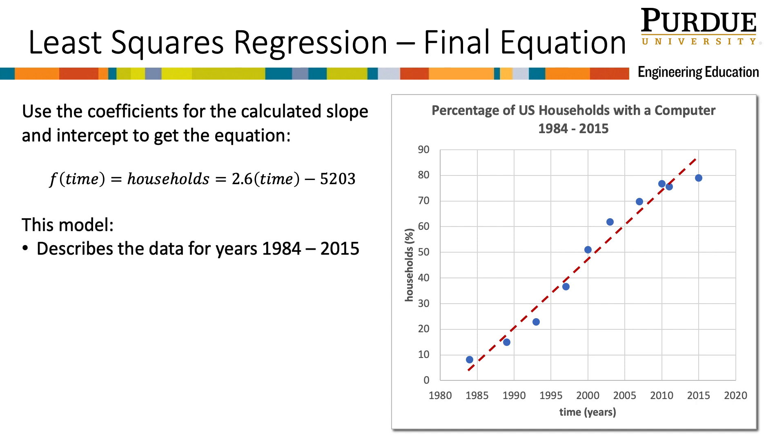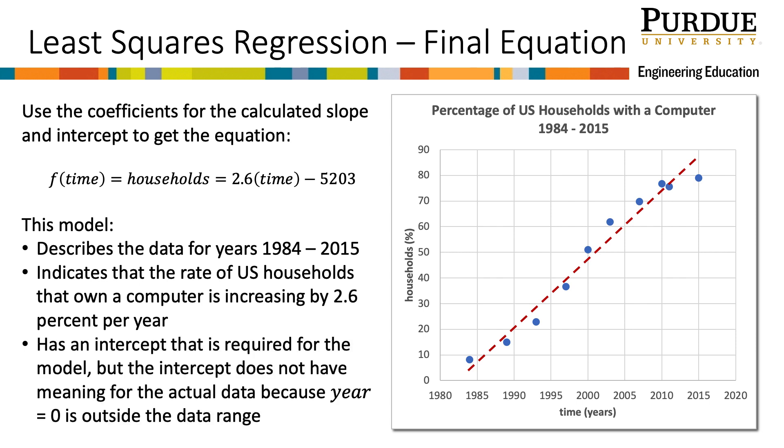This linear model describes the data for years 1984 through 2015. It indicates that the rate of US households that own a computer is increasing by 2.6 percent per year. And it has an intercept that is required for the model but does not have meaning for the actual data because year equals zero is outside the data range and does not make sense in this context.